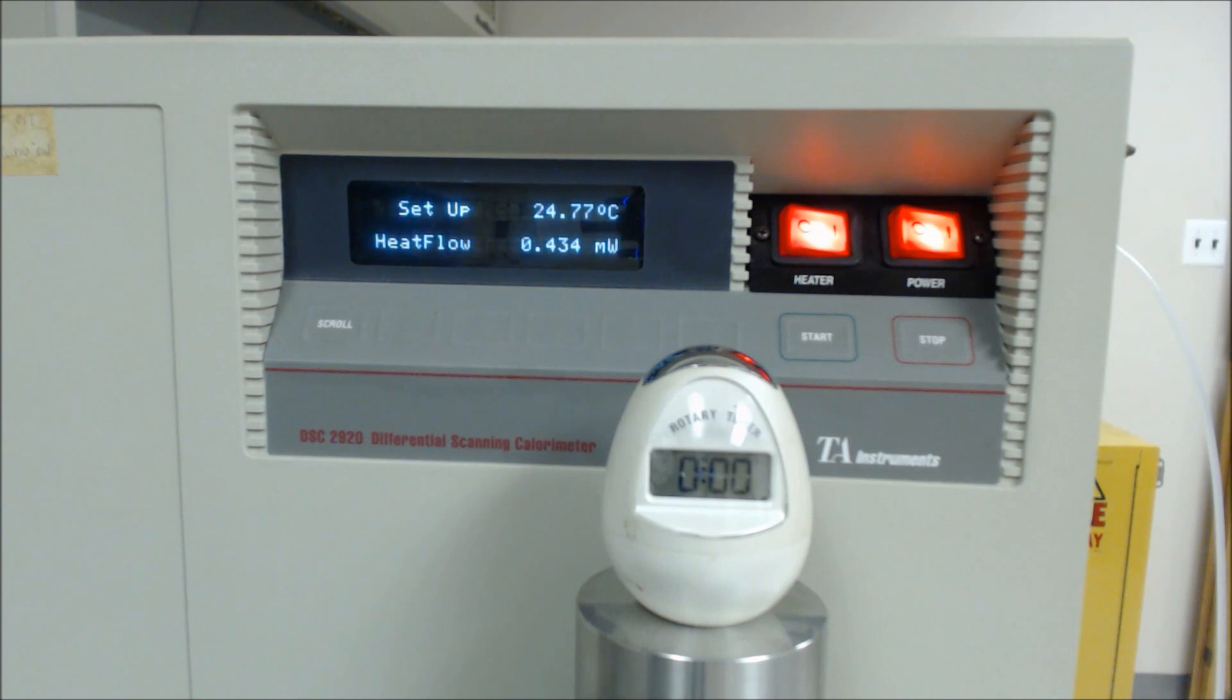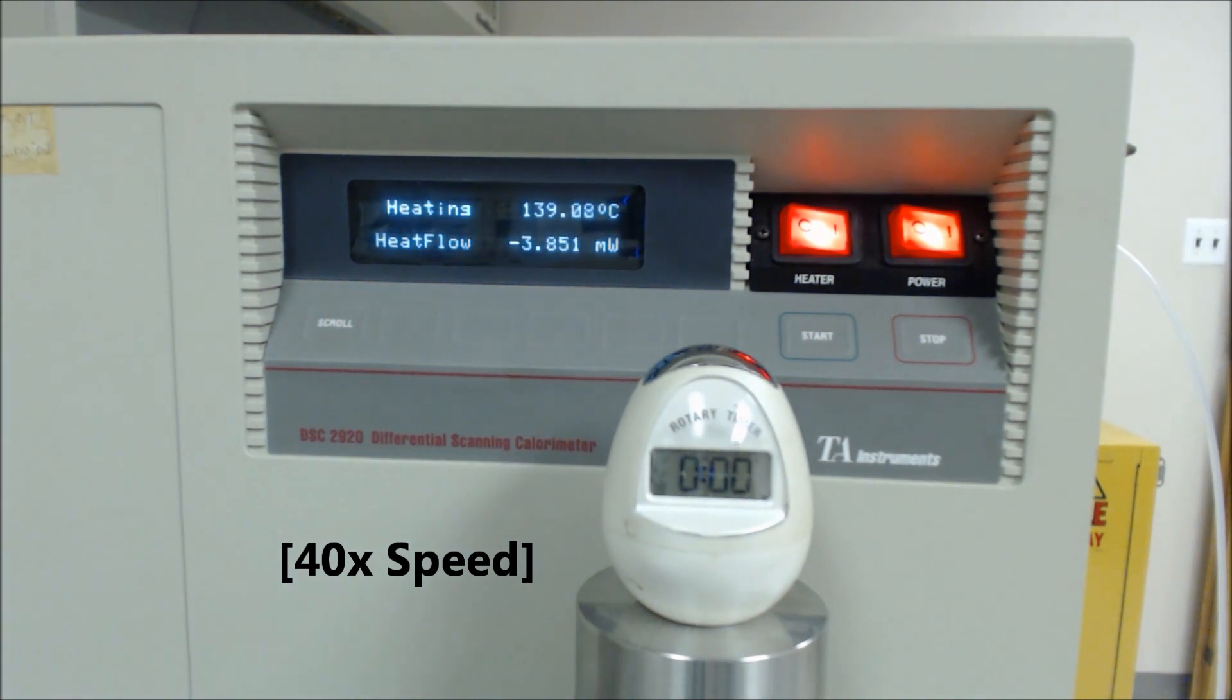The test is now underway as you can see by the red heater light which is just lit up. The first phase of the test is for the DSC cell to ramp its internal temperature up to 200 degrees C, thus melting the plastic. This is done at a rate of 20 degrees C per minute. As you can see by the continuously rising monitor temperature, the cell is doing that now.